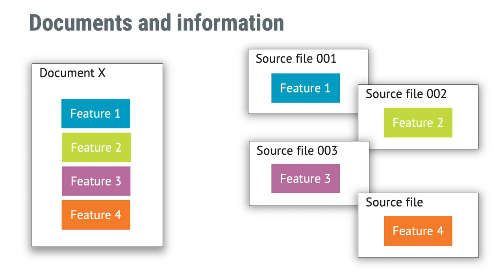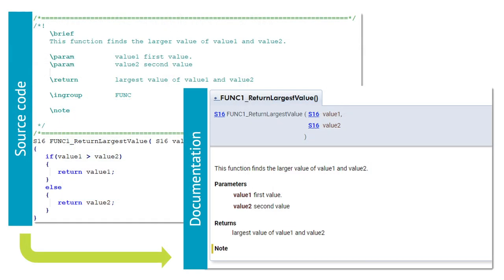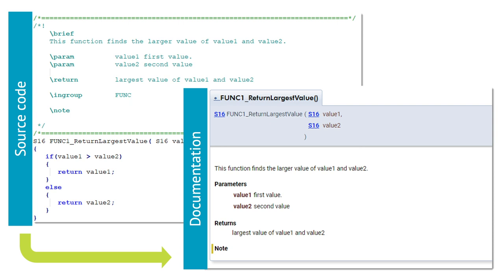But since you already version control your source code, why not let some of your documentation coexist with the code instead of forcing the information into a traditional paper document? Either you keep the information in the source file, or you decide to extract information from source files and create traditional documents. Your way of working with information and documents can be explained in the software development plan. In this example, I have used Doxygen format for the comments. If needed, you can easily extract the comments to traditional document formats — but when you later maintain the code, the documentation is available where it supports the developer the most, and it's also much easier to maintain.